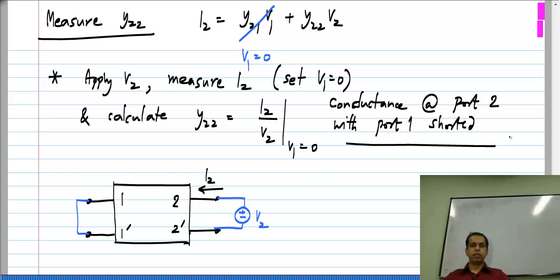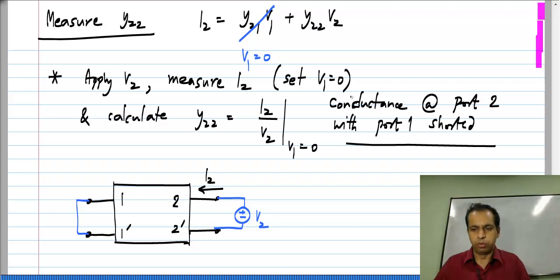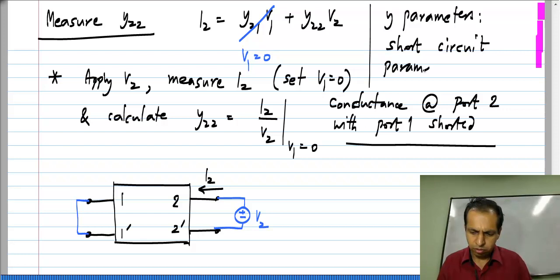So this is how we evaluate the four parameters. If you are given a circuit, the most convenient approach is to short one port and make measurements on both ports, then short the other port and make measurements on both ports — that gives you all four parameters. There are other ways, such as taking four different combinations of V1 and V2 and solving the resulting equations, but the short-circuit method is most convenient. Because the measurement of Y parameters involves shorting of the ports, Y parameters are also known as short-circuit parameters.